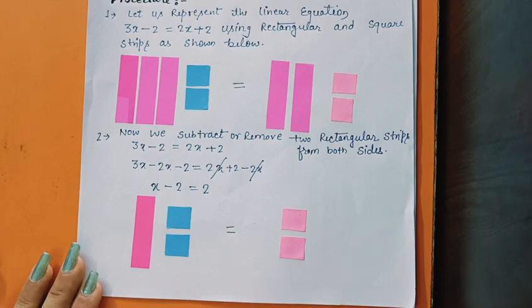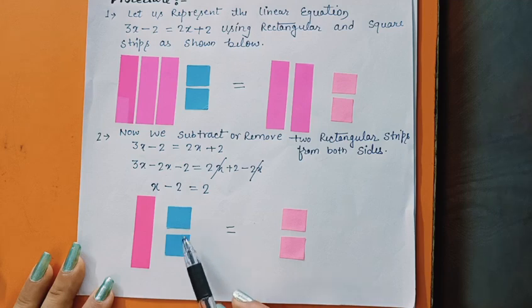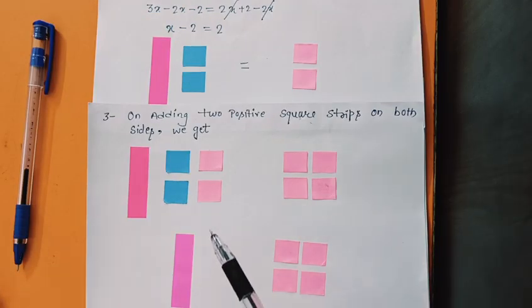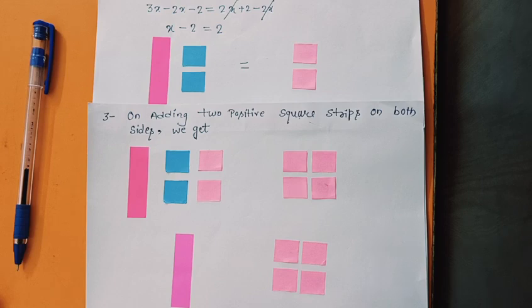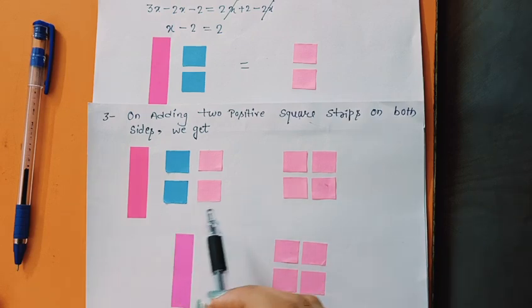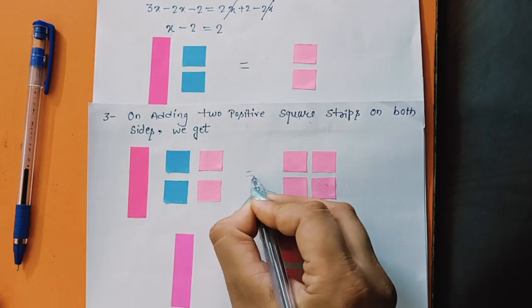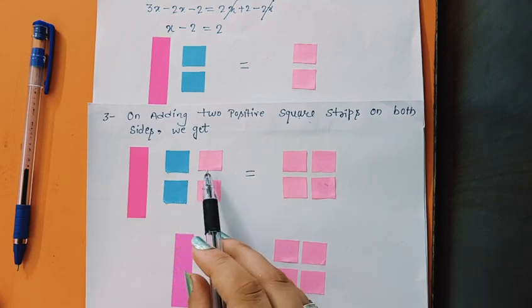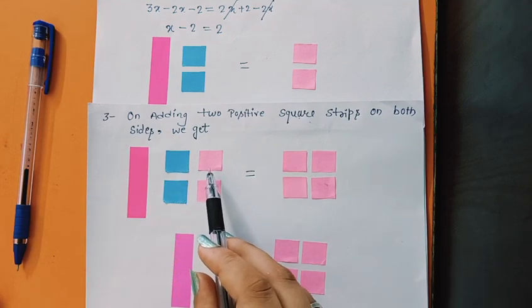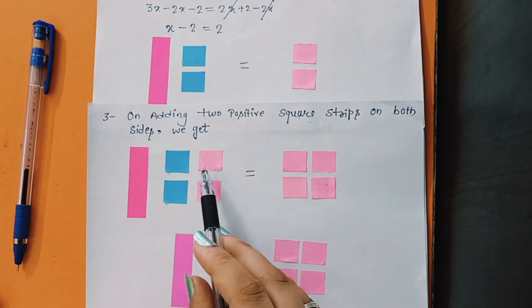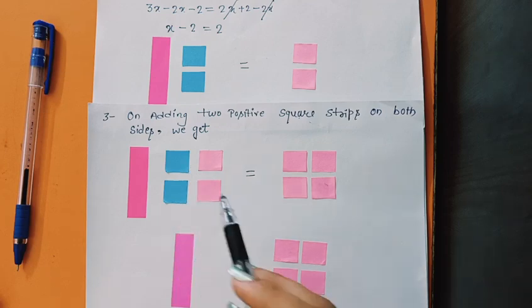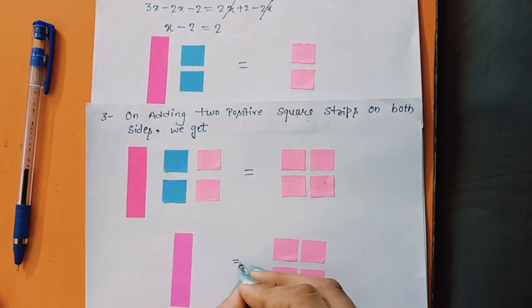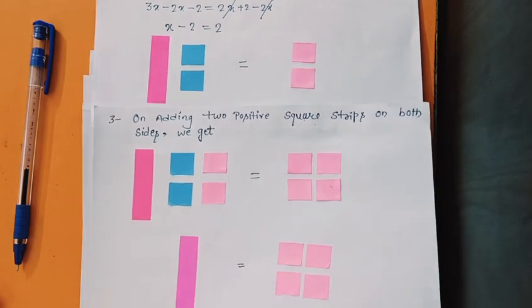Now in third step, on adding 2 positive square strips on both sides, we get this equation. So this negative blue color and this positive pink color cancel each other. So it becomes 0 and this one also 0. The equation we get, x is equal to 4.